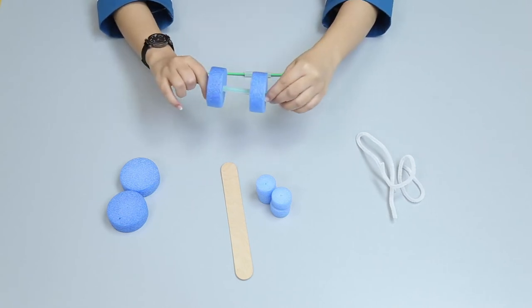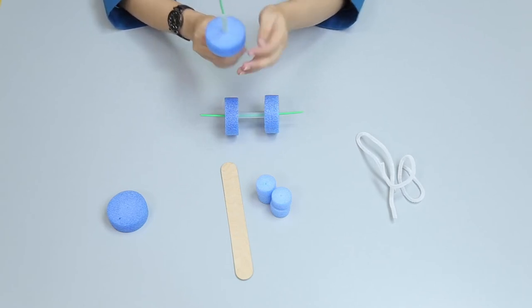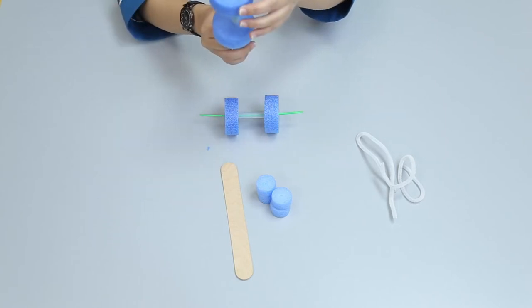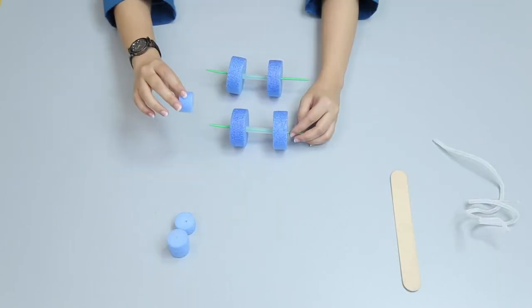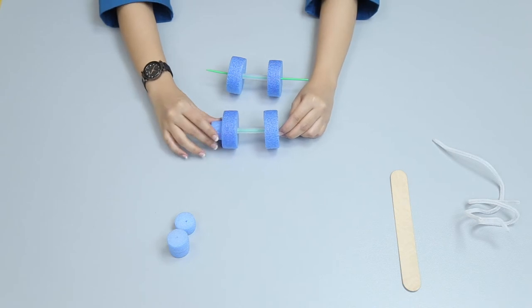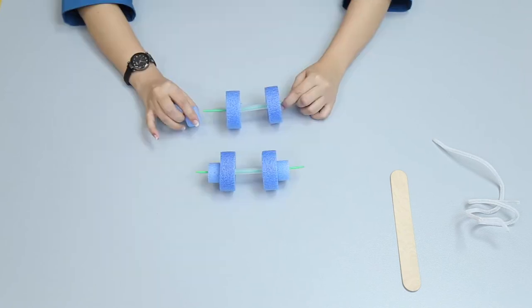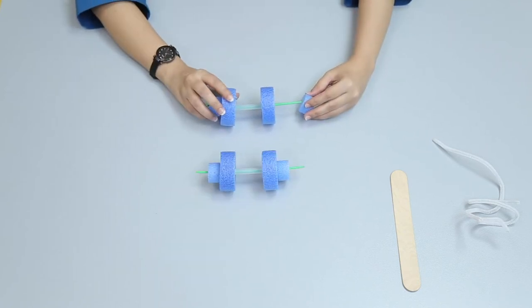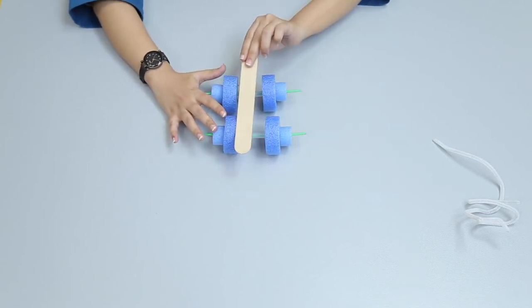Take two small foam wheels and attach them to the big foam wheels. Place the craft stick in the center of the plastic stick.